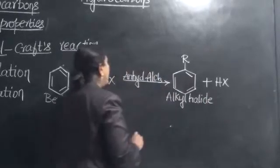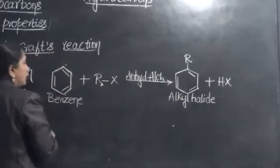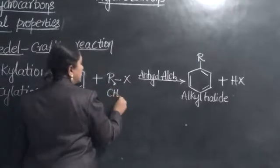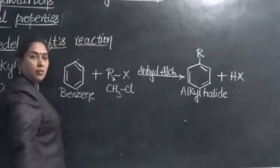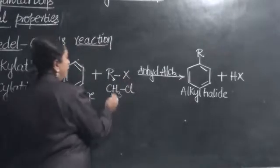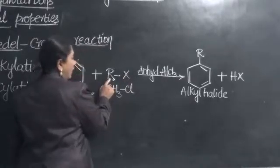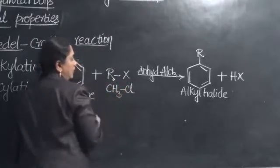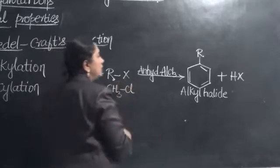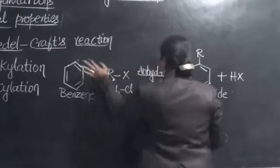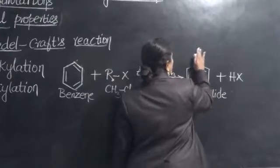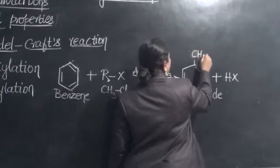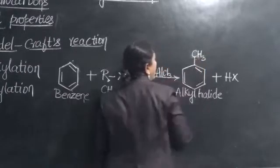So now let us try to write this reaction with an example. Benzene when treated with methyl chloride which is an example of alkyl halide. I replace the R alkyl group with methyl, halogen with Cl. So now what happens to the benzene ring? The methyl group will get attached to the benzene ring. So let us do that change here by specifically writing the methyl as our alkyl group.